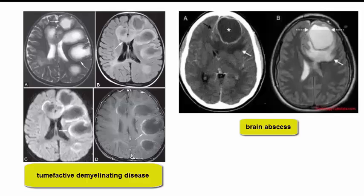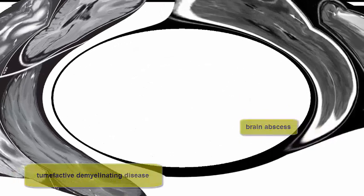The differential diagnosis on imaging includes tumefactive demyelinating lesions and brain abscess. Perfusion-weighted imaging may show vessels coursing through a demyelinating lesion, which is not likely in a neoplasm.